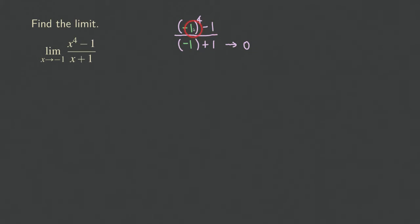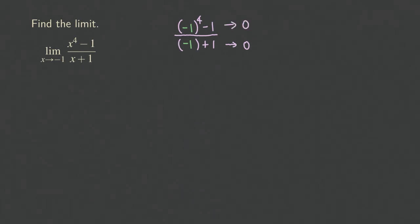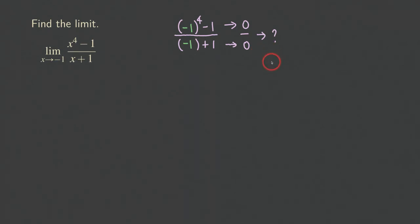If you look at the top, the numerator gives you negative one to the fourth power. Since that's an even power, negative one raised to an even power gives you positive one, and positive one minus one gives you zero. So this is an indeterminate form of zero over zero, and we have no idea what this limit is equal to at this point — we cannot draw a conclusion.